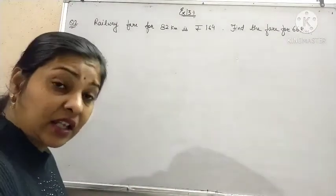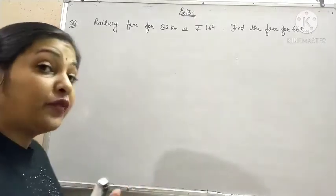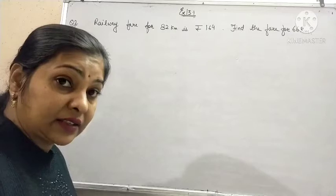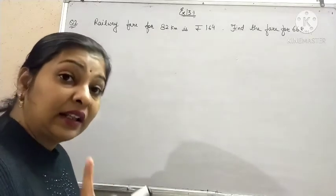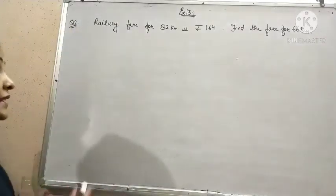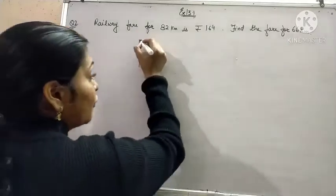That means distance is decreased. Now use your common sense that whether the fare will decrease or increase. Surely it will decrease. That means both the quantities are decreasing. That means that it is a direct proportion.